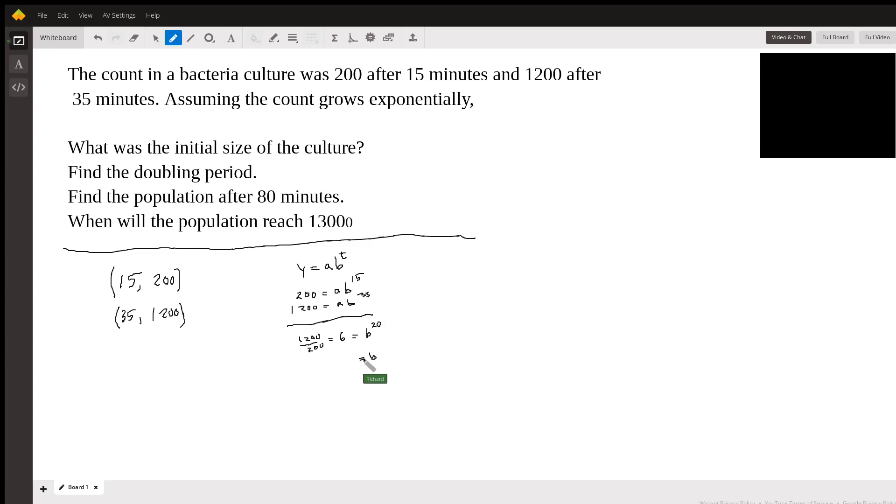And this gives us B to the 20th power is 6. So B itself is the 20th root of 6. Okay, so it looks kind of strange to me, but that's what it is.